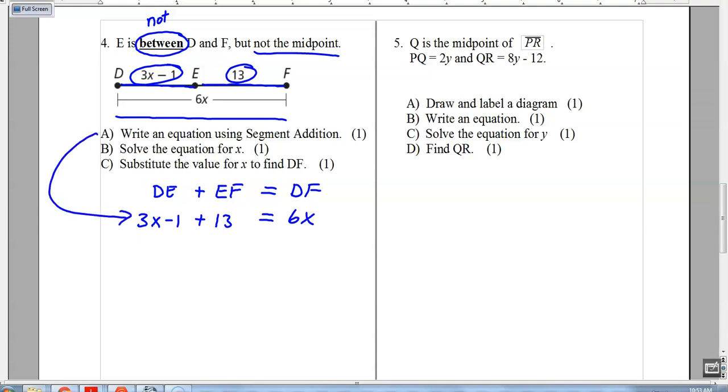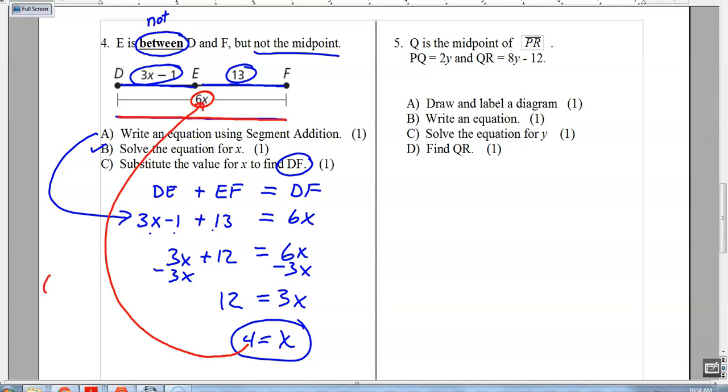So I've wrote the equation. That's part A. Now we need to solve for it. So I have three terms over here. So I'm going to combine like terms and get 3X plus 12 equals 6X. And now I'm going to attack the smallest variable. I'm going to minus 3X from both sides, which gives me 12 equals 3X. Divide, divide. And I get X equals 4. So I solve for X. That one's done. Now I need to substitute X in to find the true length of DF. So this represents the true length from D to F. So I'm going to take that 4. I'm going to plug it in. And 6 times 4 equals 24. So the distance from D to F is 24.